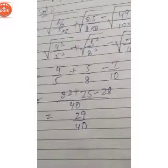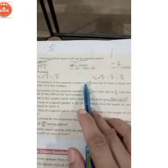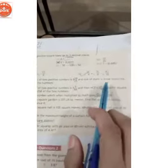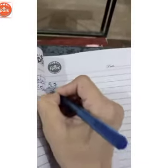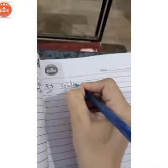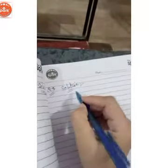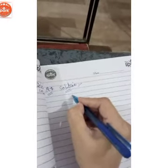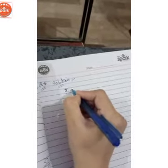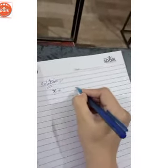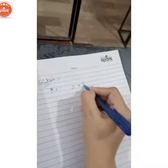Question number 7: the product of 2 positive numbers is — in whole number — 9 and 18/25, and one of them is 3 times the other. Find the numbers. This is question number 7. The product of 2 numbers is 9 and 18/25.